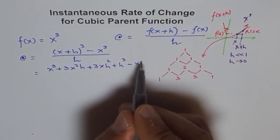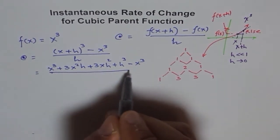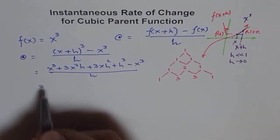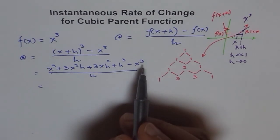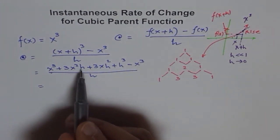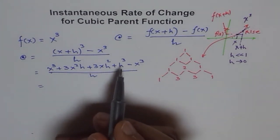We get x³ + 3x²h + 3xh² + h³ minus x³ divided by h. Now, x³ minus x³ is 0, so we are left with 3x²h + 3xh² + h³.